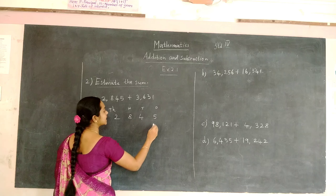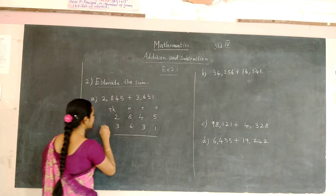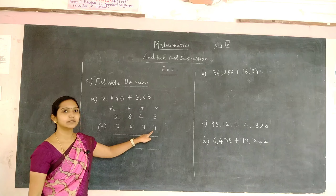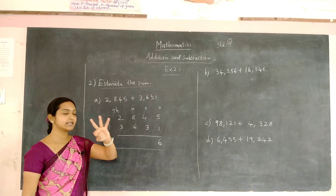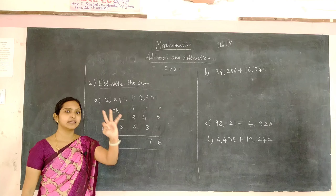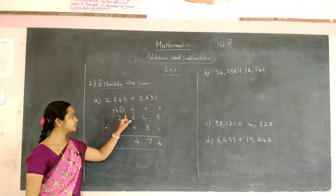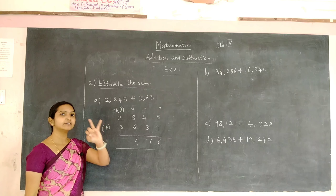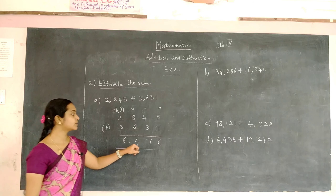Now write the second number starting from the right, that is 1, 3, 6, and 3. Now we are going to add these two numbers. 5 plus 1 will be 6. To 4 we are going to add 3, that is 5, 6, and 7. To 8 we are going to add 6, that is 9, 10, 11, 12, 13, and 14. 4 is written here and 1 is carried to the next place. 2 plus 1 will be 3. To 3 we are going to add 3, that is 4, 5, and 6. So the answer is 6,476.